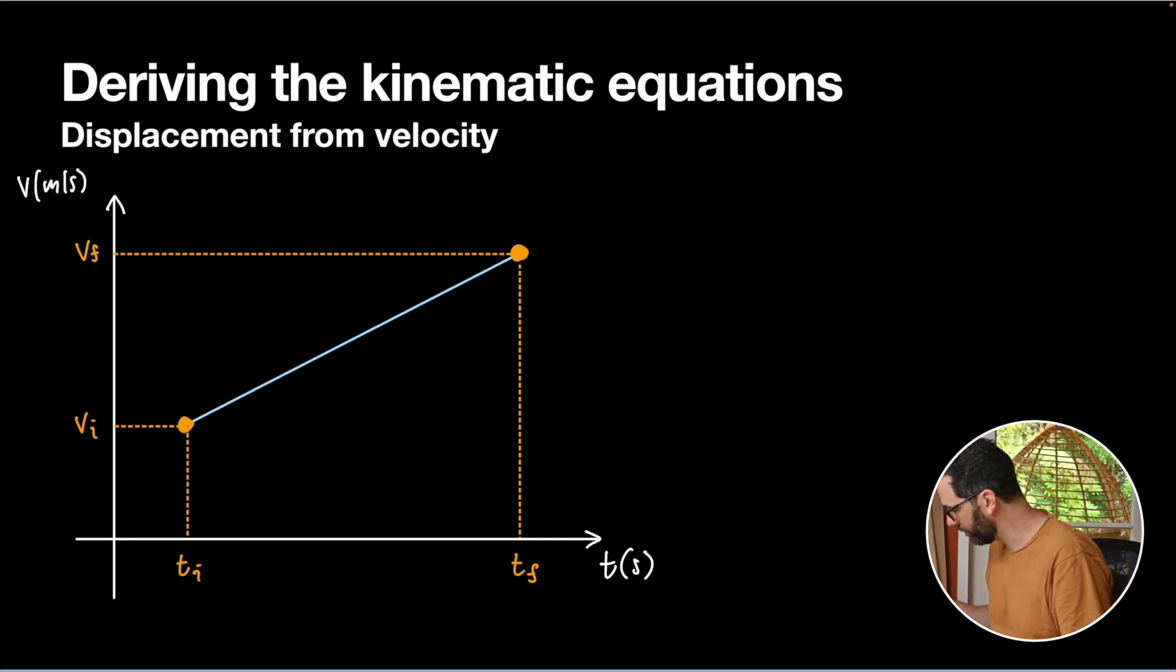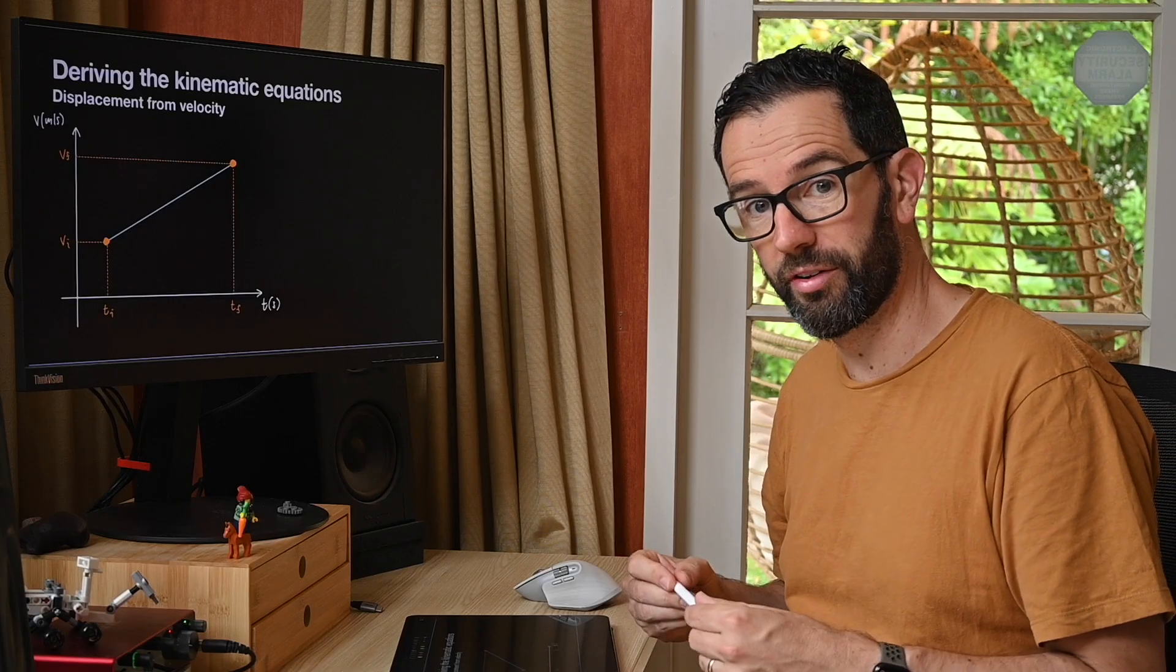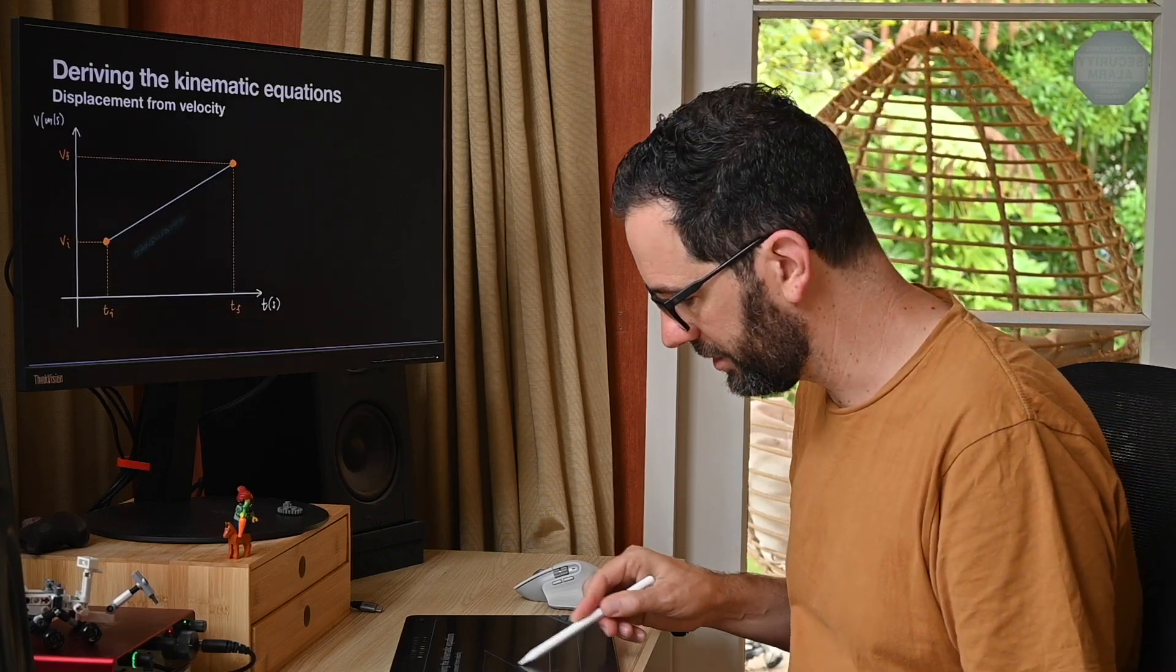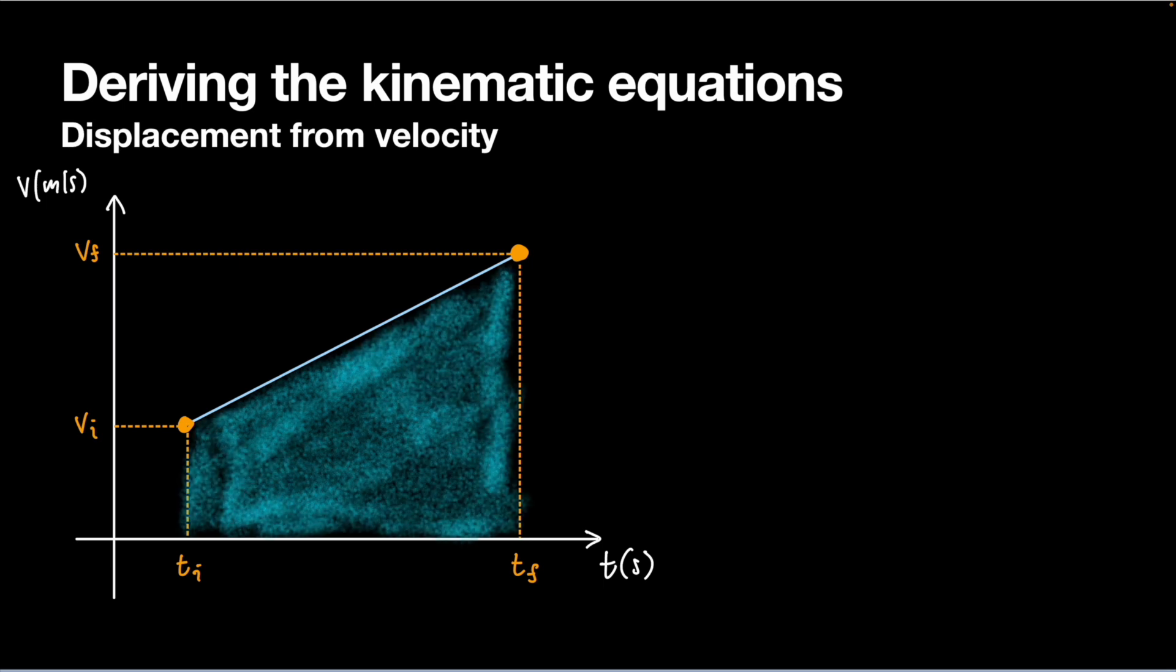Now if you remember from our motion graphs knowledge, we know that we can calculate the displacement from this graph by working out the signed area. So let's color that in. And probably the simplest way to do that for this particular problem is to split it up into two pieces, a rectangle with a triangle on top of it. So let's just mark on some dimensions onto our picture here. Along here, we're going to have vf minus vi, that's our change in velocity. Along here, we have vi. And then along the bottom, we're going to have Δt.